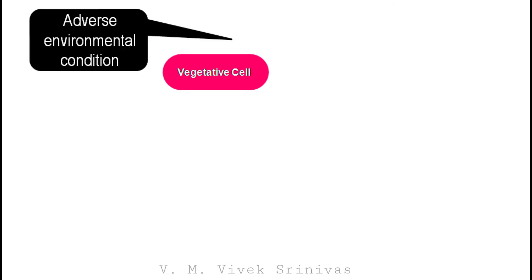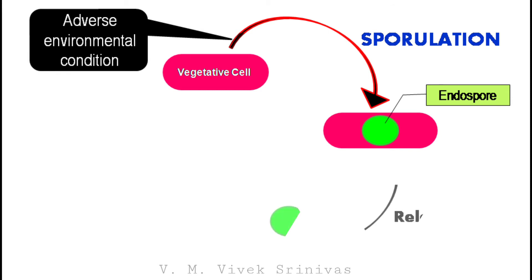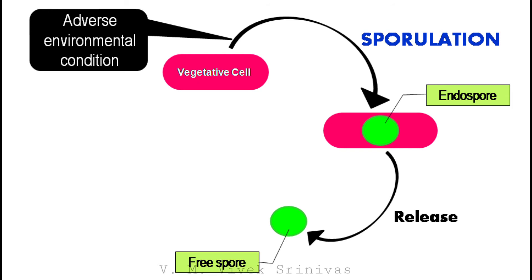During adverse environmental conditions, the bacteria form the endospore — that is, the spore within the bacterial cell. The process by which the endospore is formed in bacteria is referred to as sporulation. Later, the mature endospore is released from the vegetative cell to become the free spore.